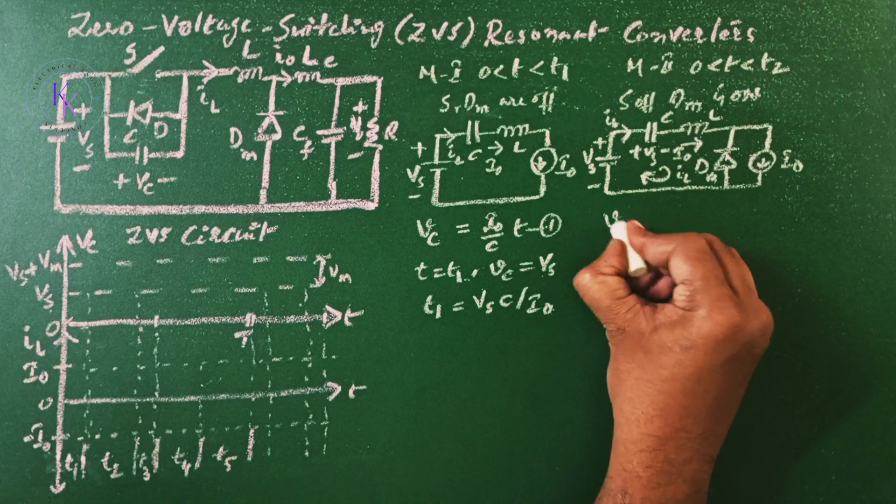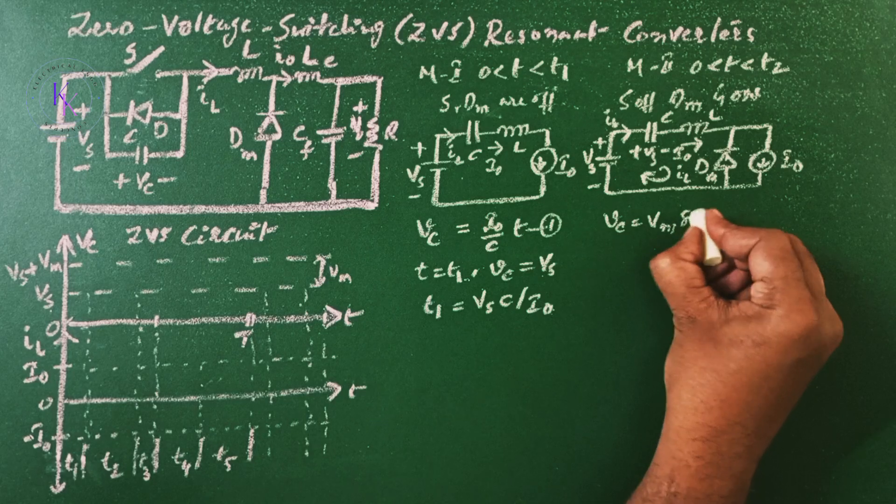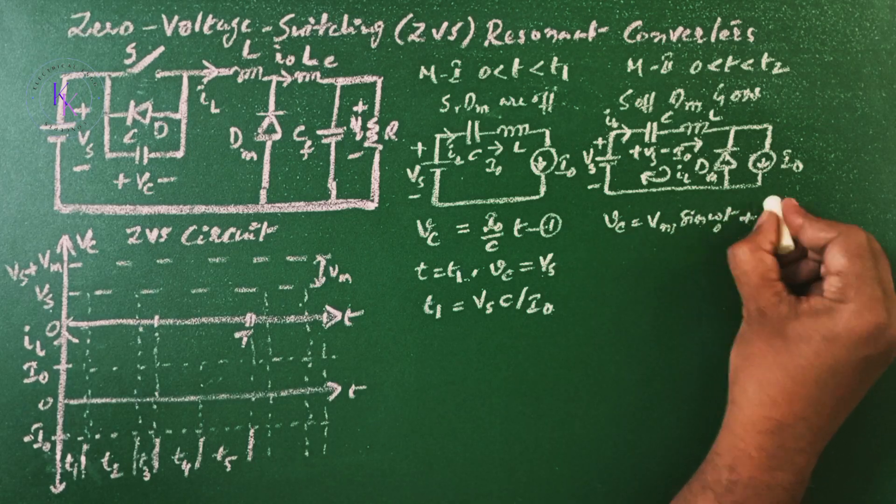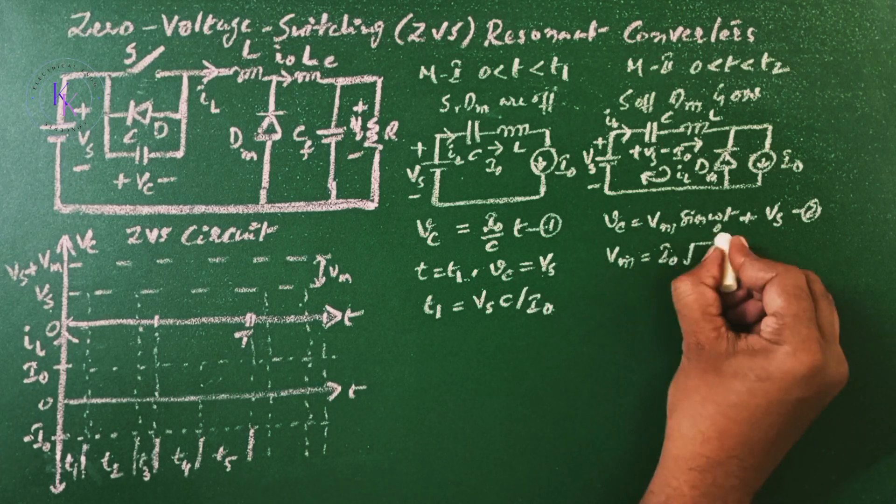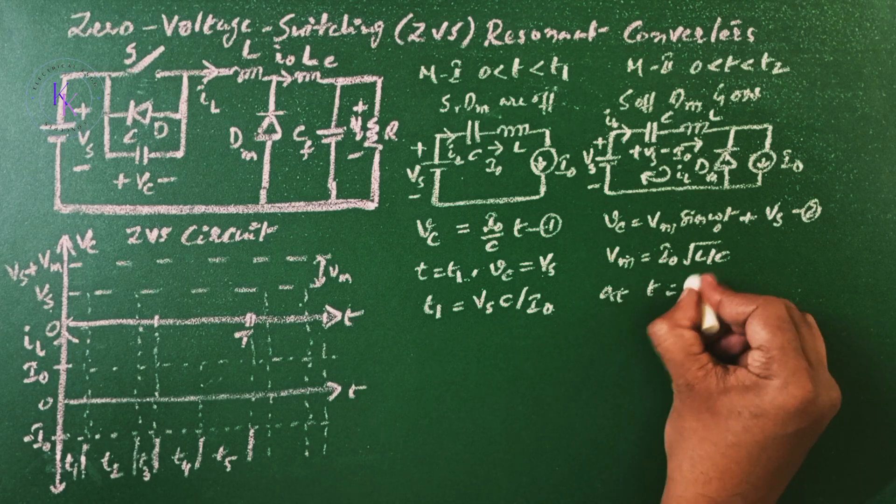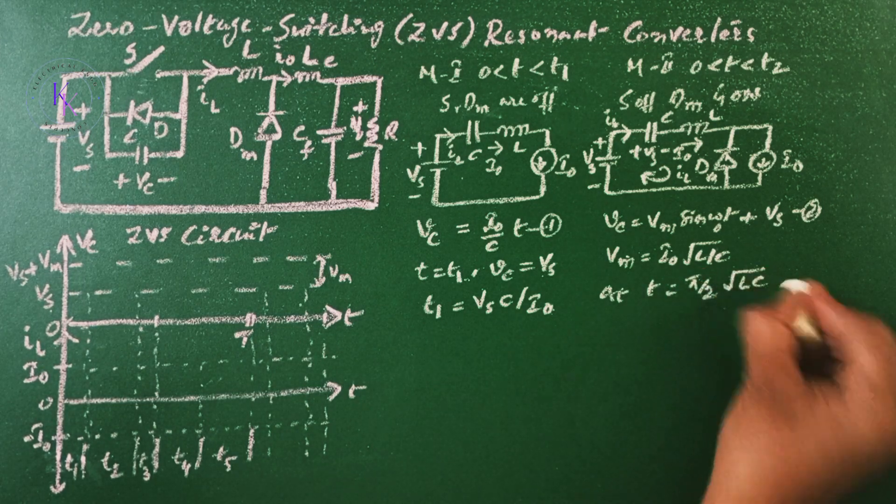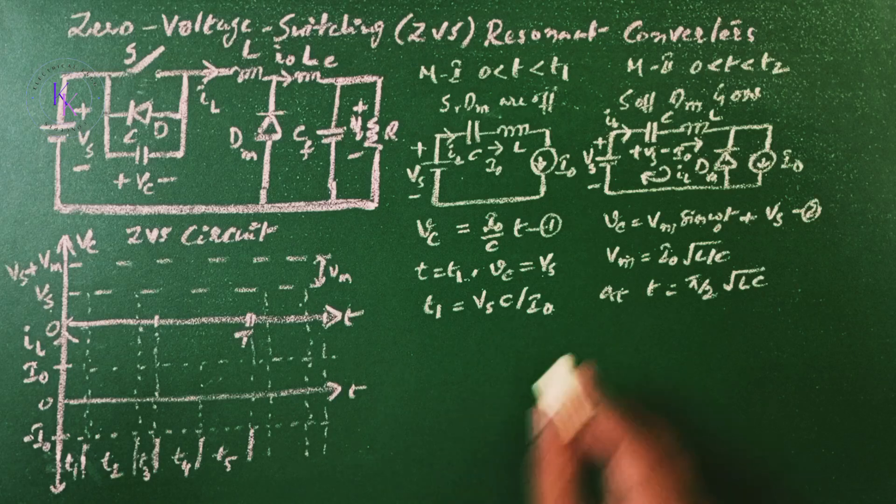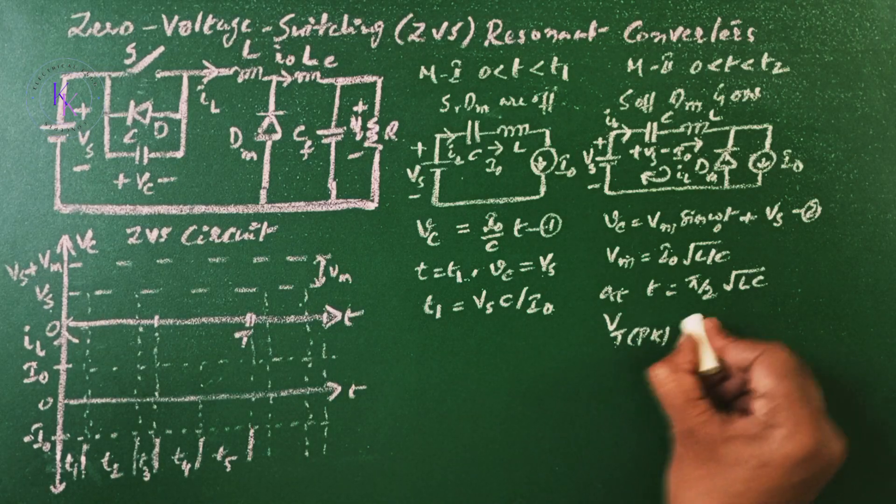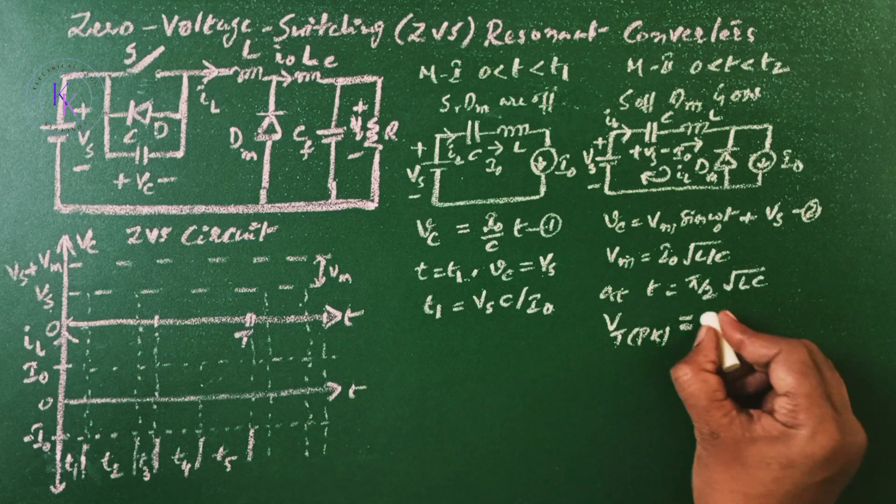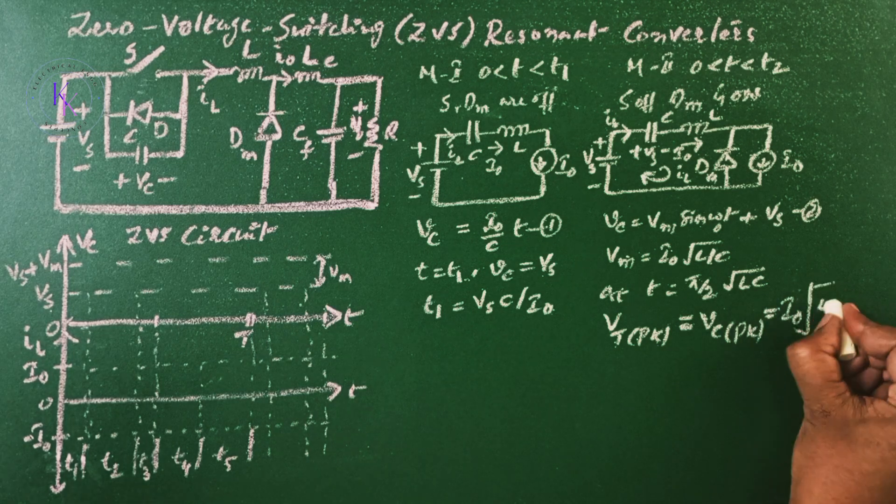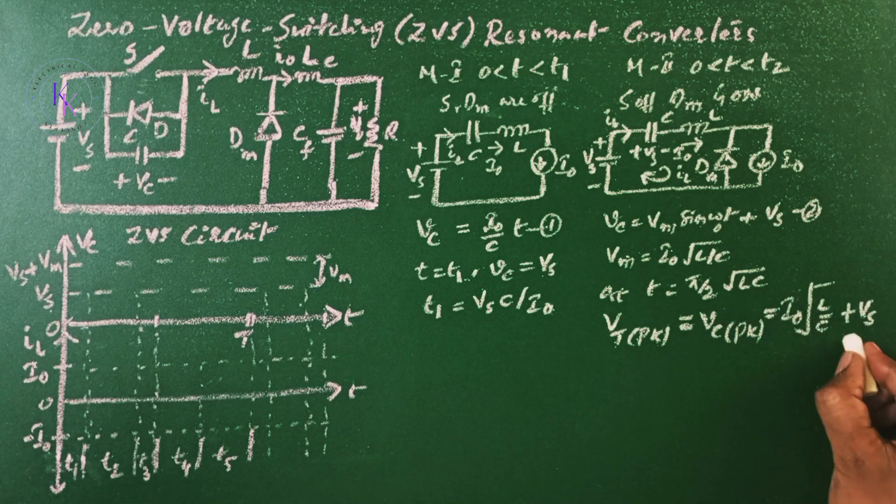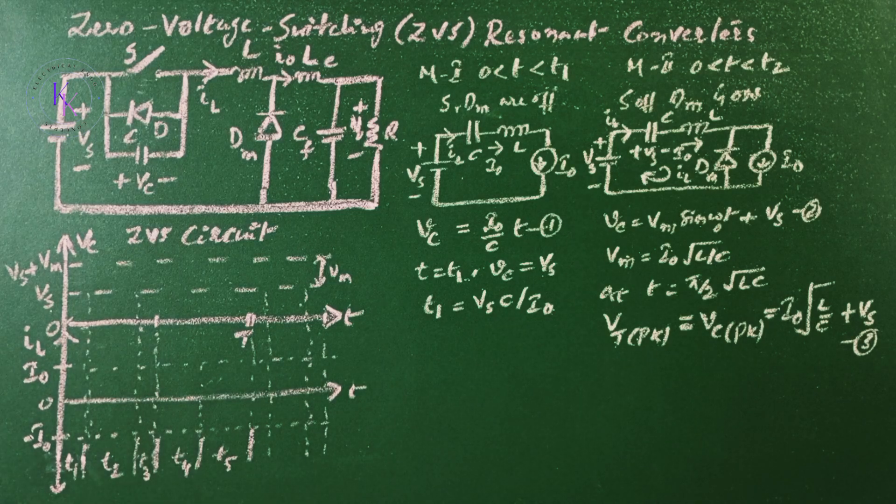The capacitor voltage VC is given by Vm sine omega naught T plus VS, where Vm is equal to I0 square root of L by C. At T equals to pi by 2 square root of LC, the peak switch voltage, that is VT peak, is going to occur, and the voltage across the switch is nothing but the voltage across the capacitor, which is given by I0 root L by C plus VS.